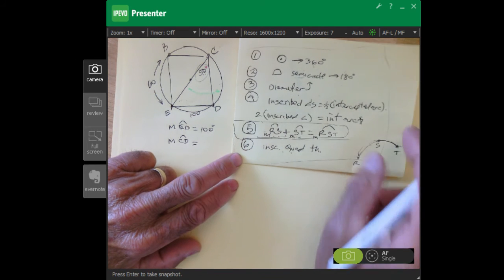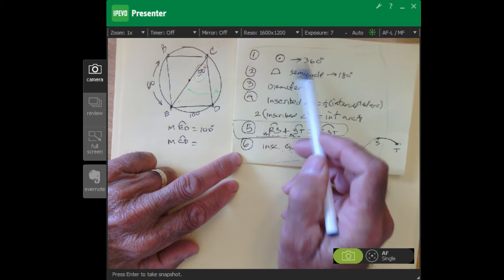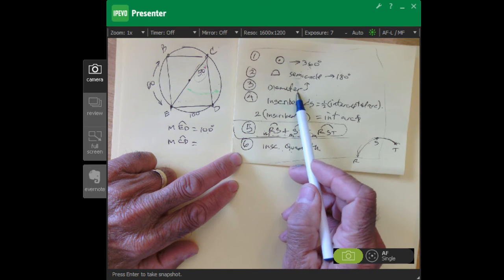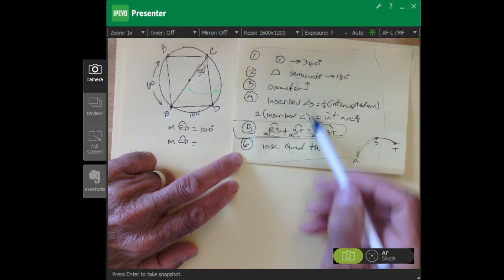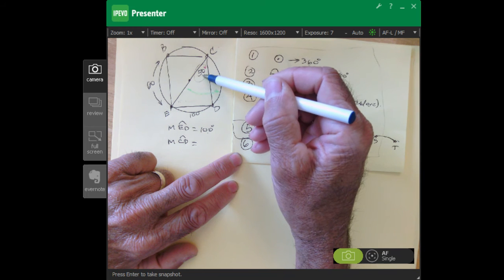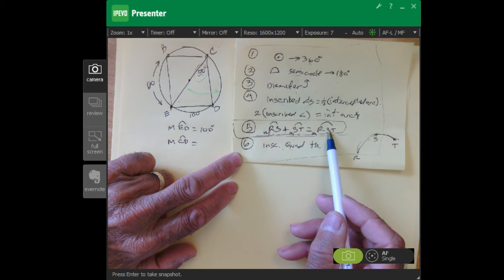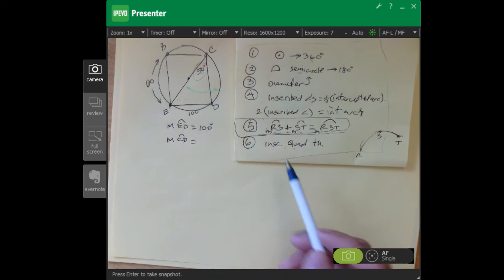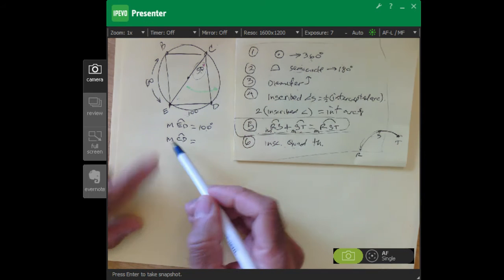Circle 360 degrees, semi-circle 180. Whenever you have a diameter you know you have a semi-circle. Inscribed angles - we know the relationship between the two. This is twice as big as the inscribed angle, or the inscribed angle is half as big as the arc. Then the angle addition, the arc addition postulate, and the inscribed quadrilateral theorem.